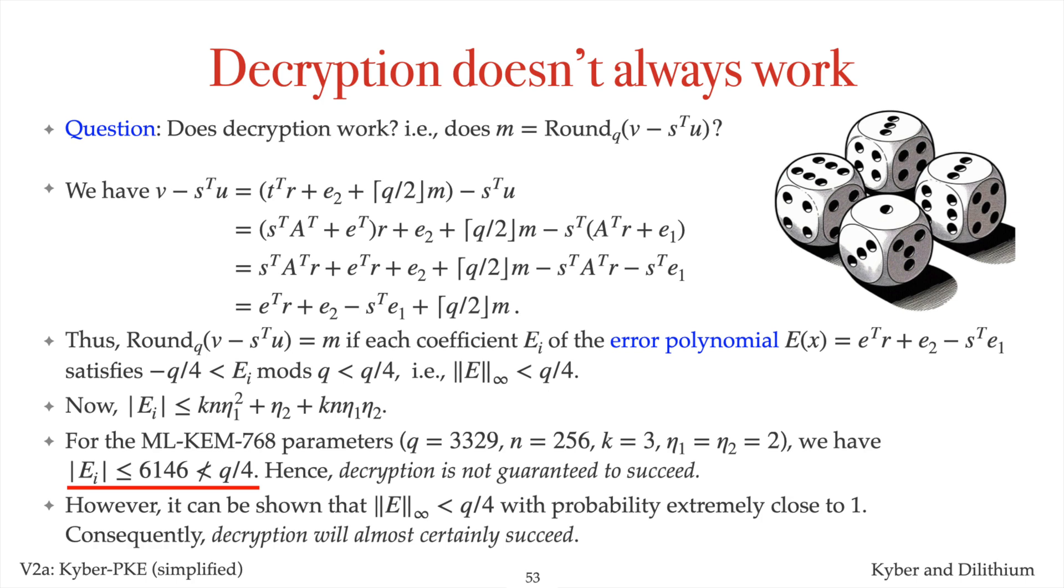Fortunately, though, it can be shown that the infinity norm of the error polynomial is indeed less than Q over 4, with probability extremely close to 1. So, in fact, decryption will almost certainly succeed. I should note that the Kyber parameters were carefully chosen to minimize the decryption error probability without compromising security.